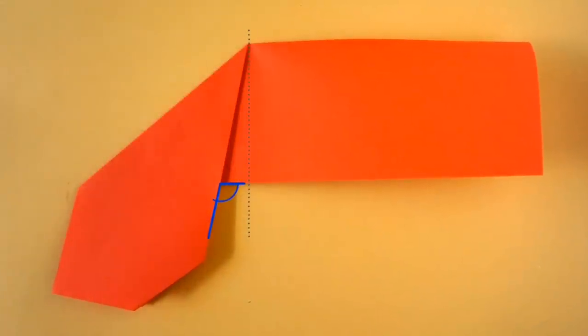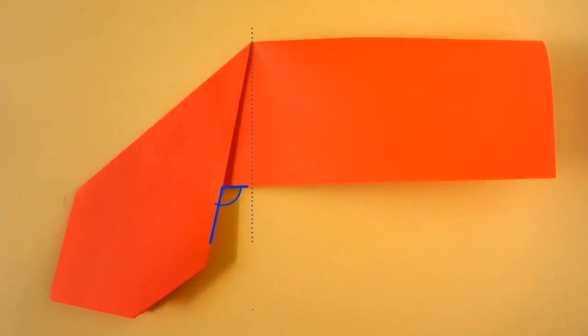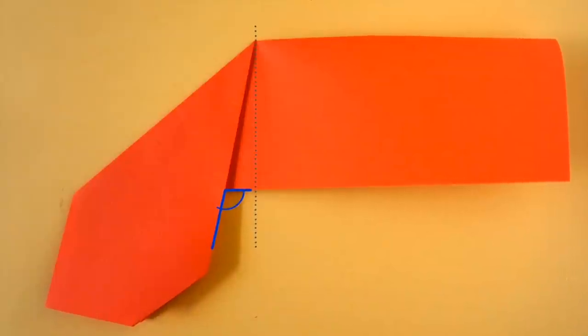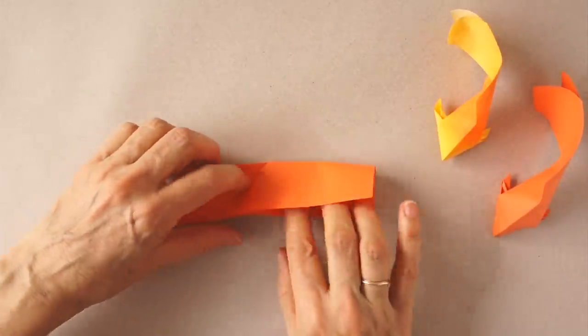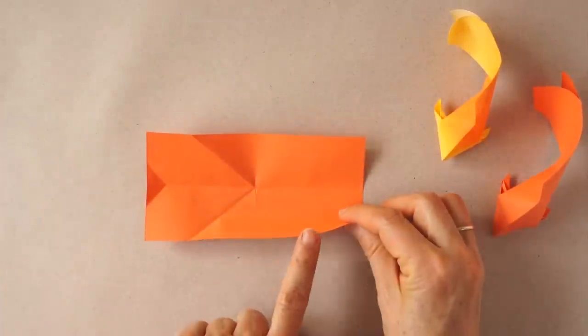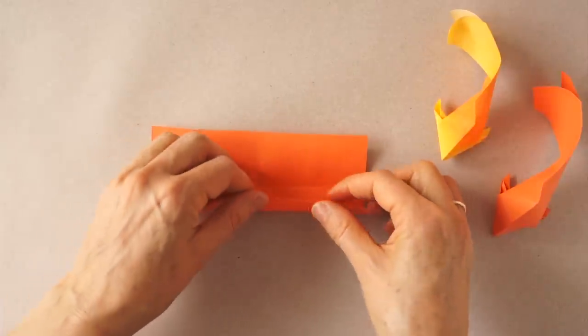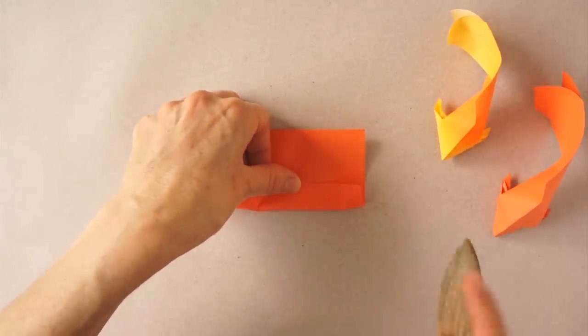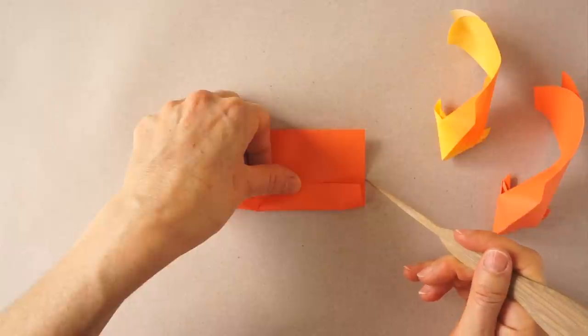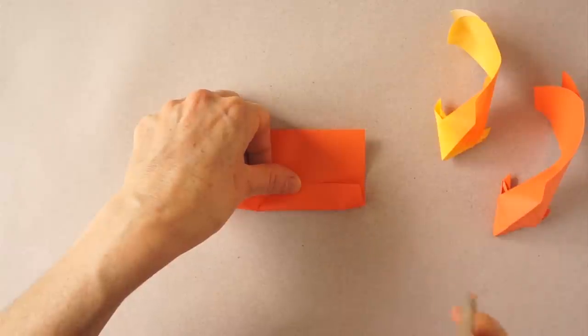This is a close-up view. Notice the obtuse angle. Unfold. We bring this edge to the center. Mark at least this distance over here. Close a little more.